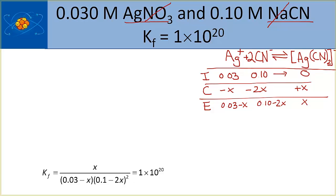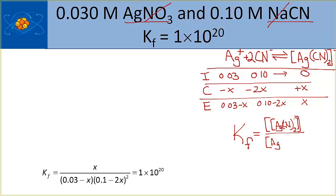The KF expression is the concentration of the complex ion divided by the concentration of the silver ion times the concentration of the cyanide ion squared, equal to 1×10²⁰.